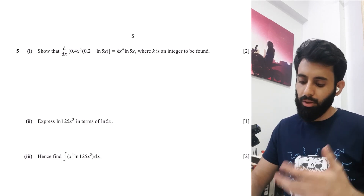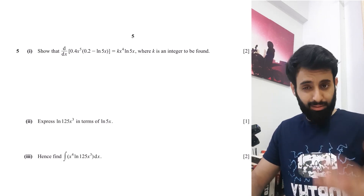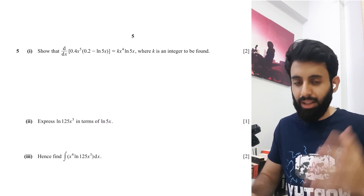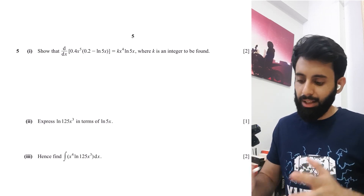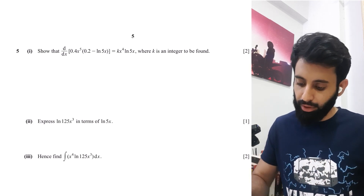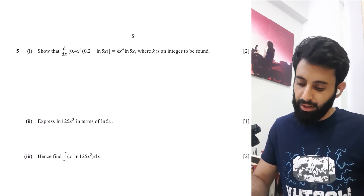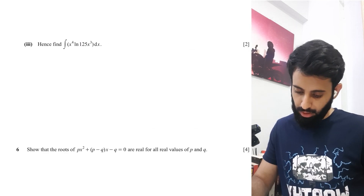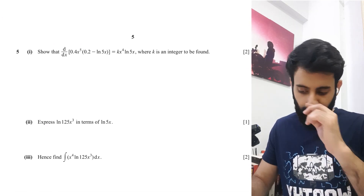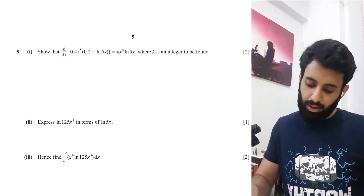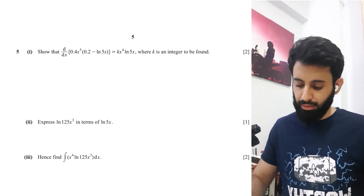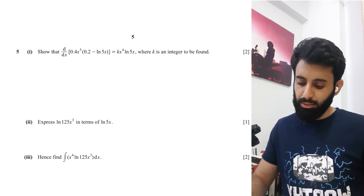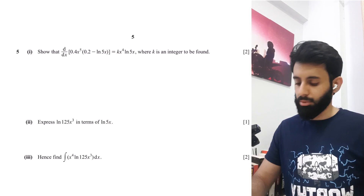Integration is basically the reverse process of differentiation, and that's exactly what we're going to be observing firsthand. This question is from May/June 2017 Paper 2 Variant 2. We need to find the differential of 0.4x^5 times (0.2 minus ln5x). Multiplying first wouldn't really help — we'd still need product rule, so let's just use product rule as it is.